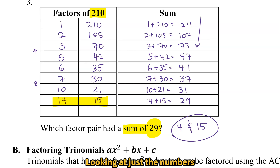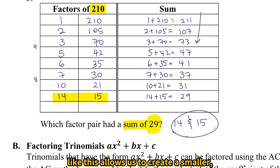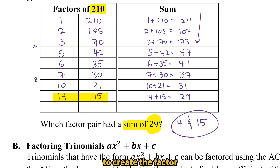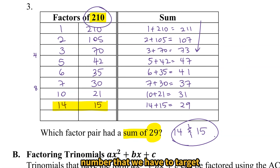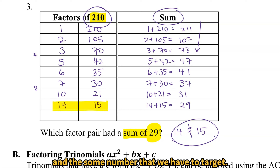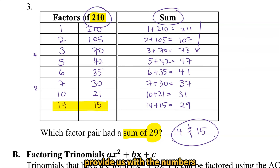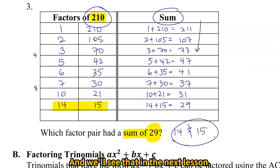Looking at just the numbers like this allows us to create a smaller, more manageable problem for factoring trinomials. We're going to use the numbers in the trinomials to create the target factor number and the target sum number — so the three numbers inside the trinomial will provide us with the numbers we need to play this game. We'll see that in the next lesson.